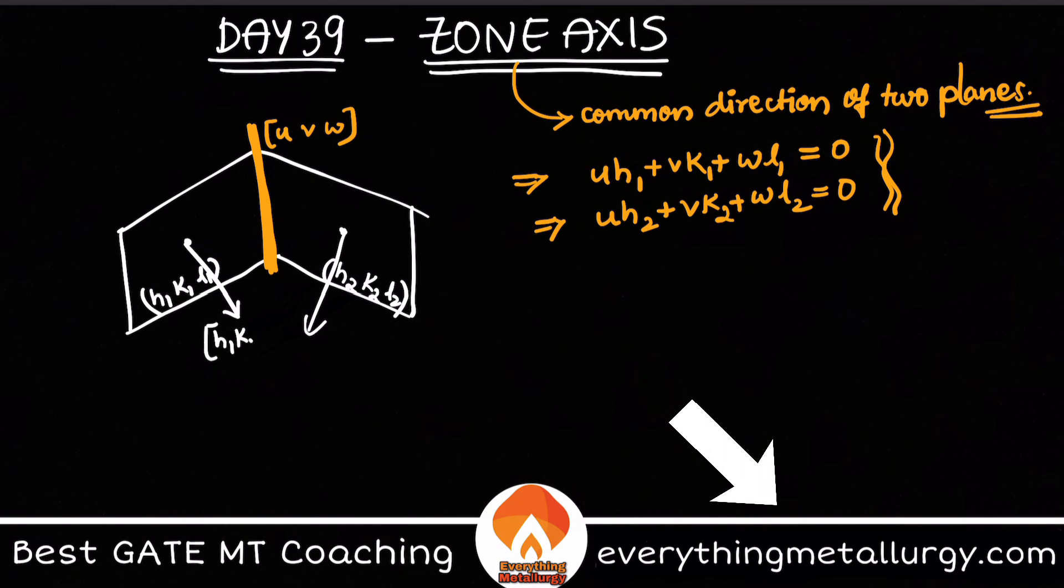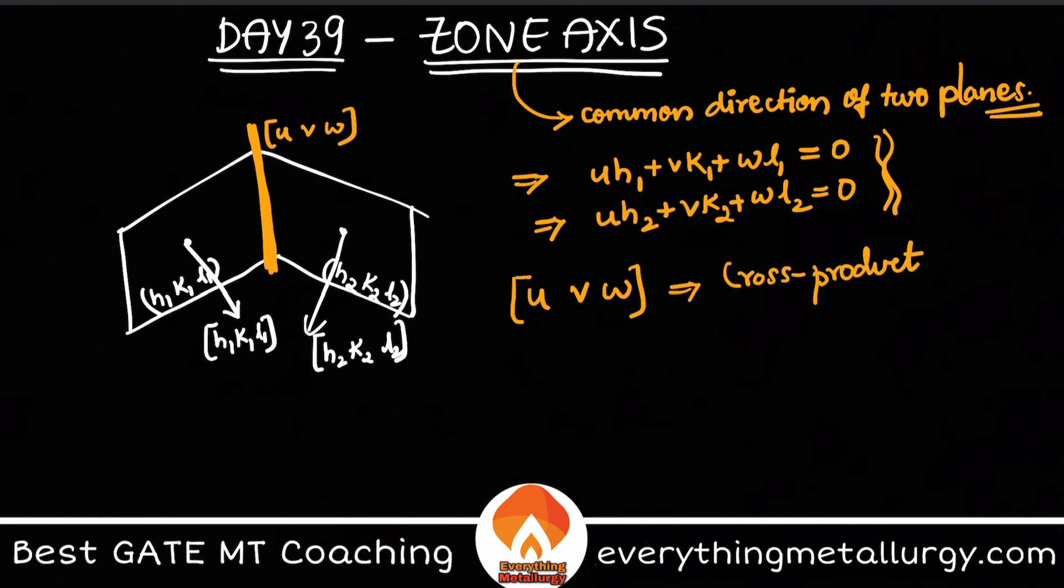So we know that the miller indices of a plane and the miller indices of the plane normal both are same, right? So this will be h1 k1 l1 and this will be h2 k2 l2. Now using the prior knowledge of vector or vector algebra, you can say that if you have a direction perpendicular to two directions or any vectors, so if your vector is perpendicular to two other vectors you can calculate the direction using cross product of the two vectors which you are talking about.